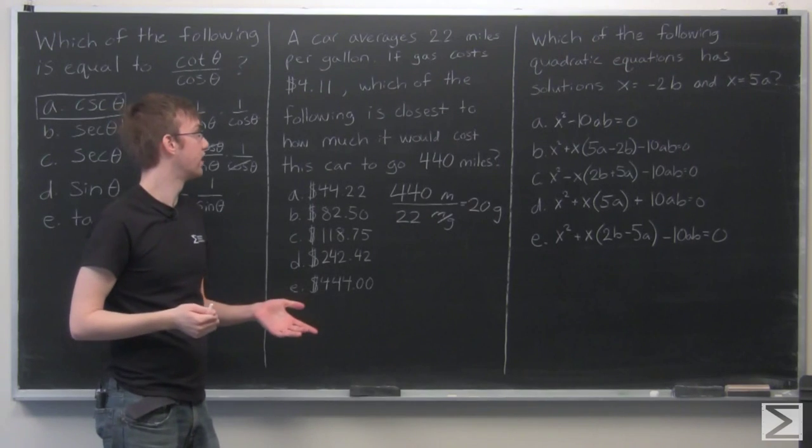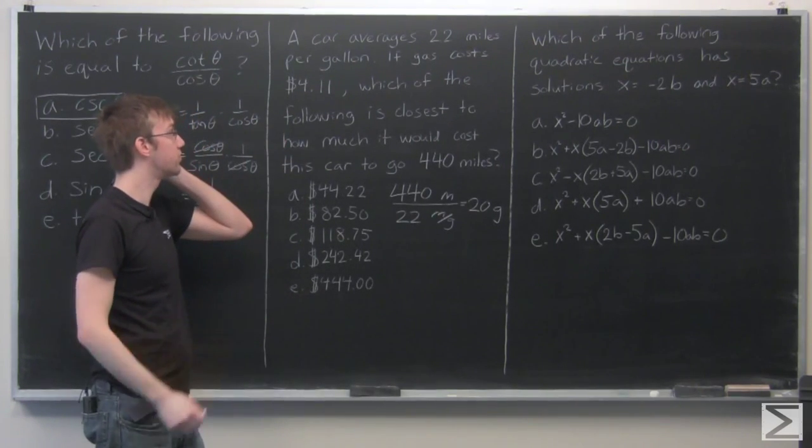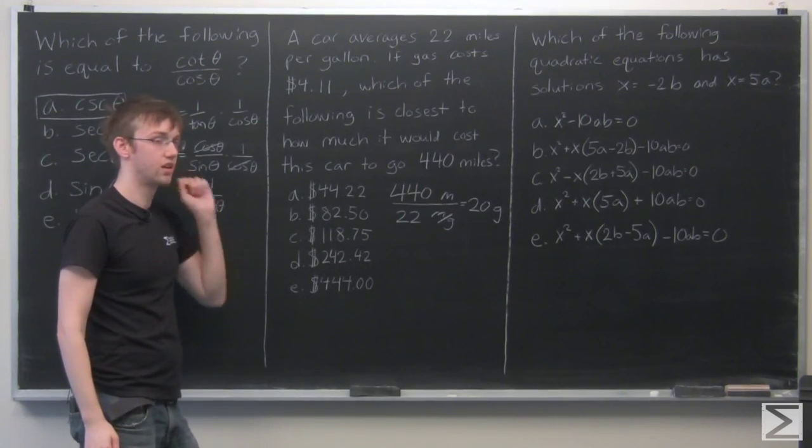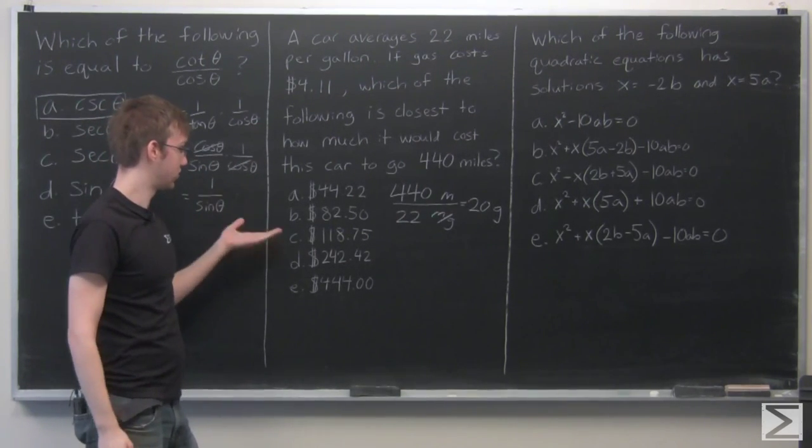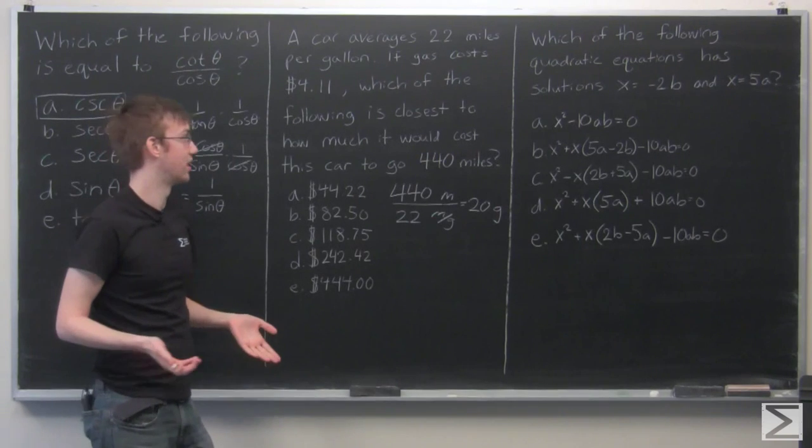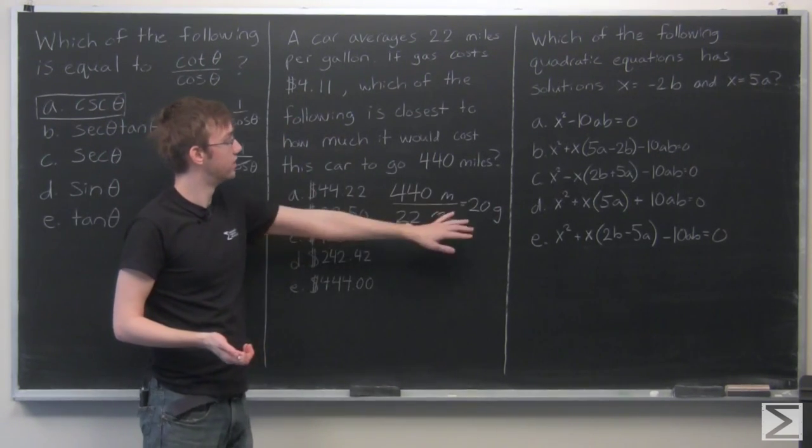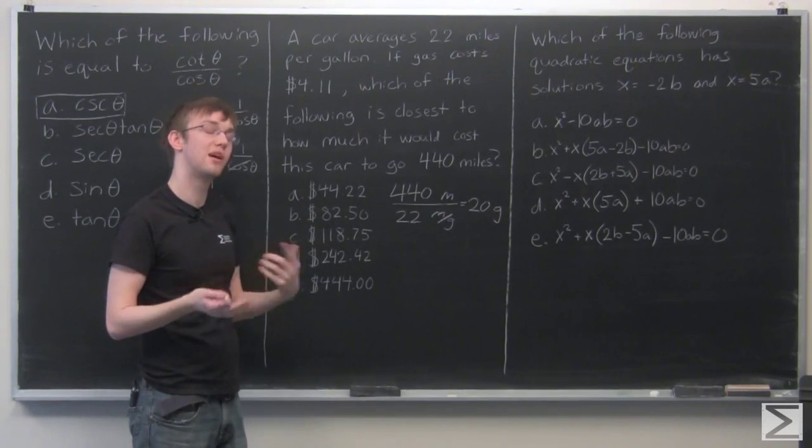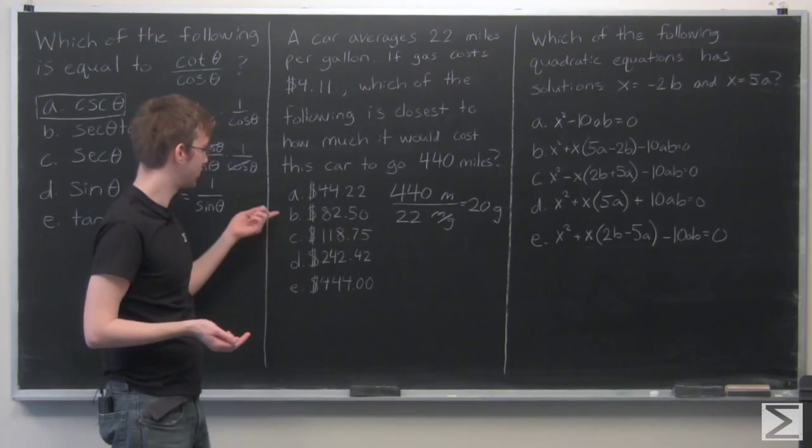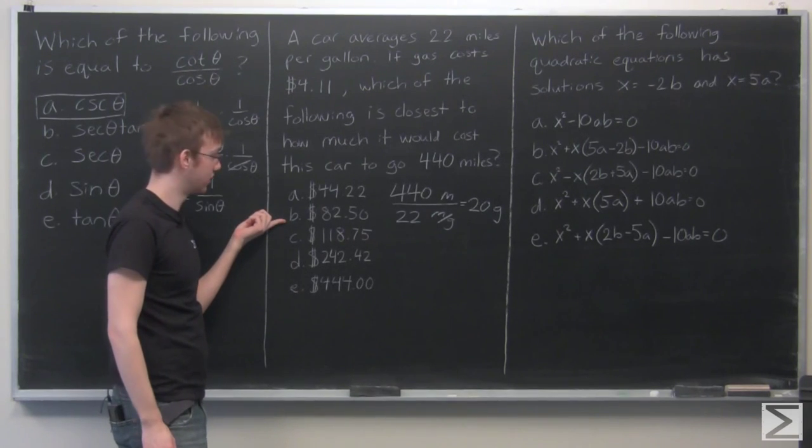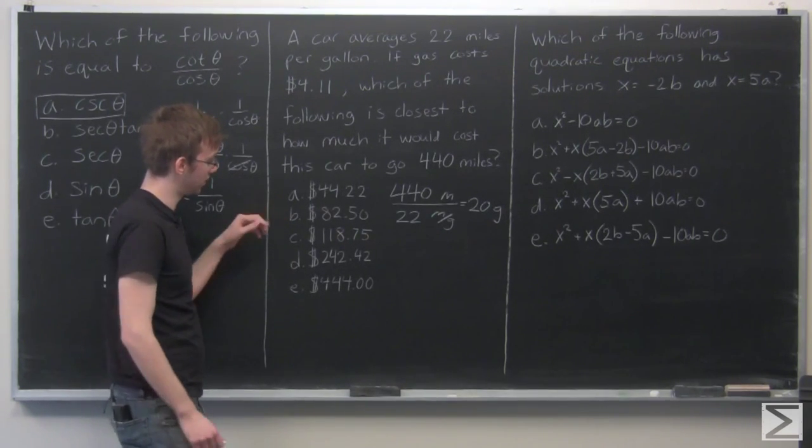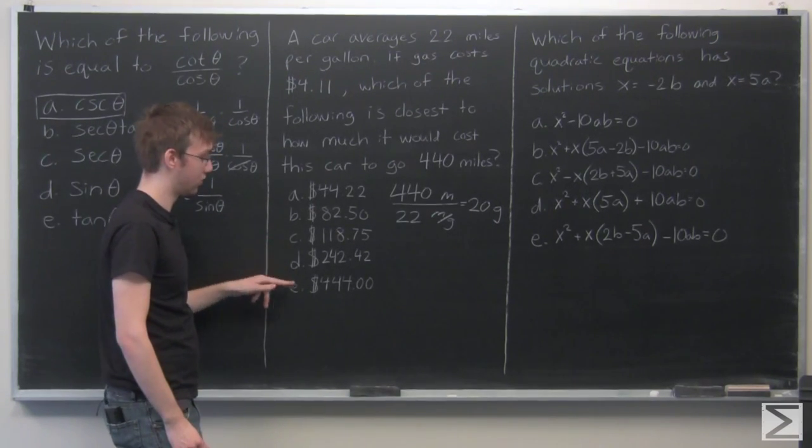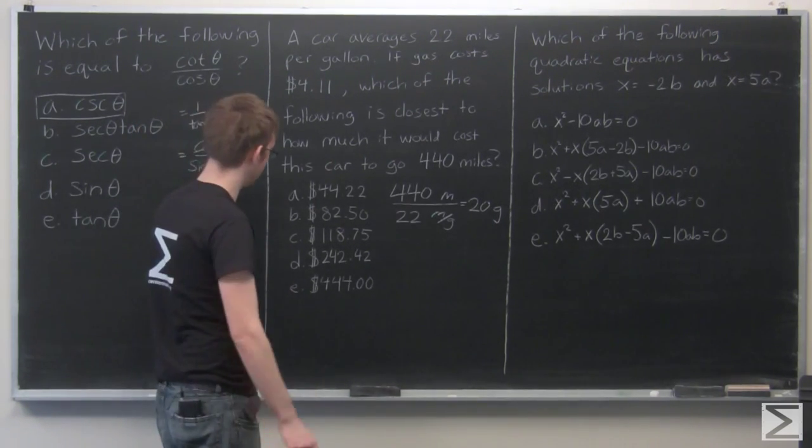So it's going to take about 20 gallons, and gas costs $4.11. Now, I'm looking at the answer choices, and I don't have a whole lot of time for this exam. And I'm saying 20 gallons times about $4 is going to equal about $80. So in our choices here, the one closest to $80 is letter B, $82.50. The other ones aren't even close. $44, $118, $200, $400. So I'm going to go with answer B.